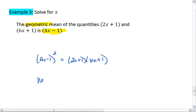We now get 16x squared minus 8x plus 1 equals 12x squared plus 8x plus 1.